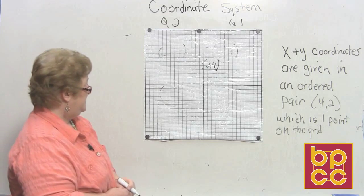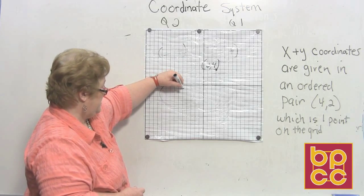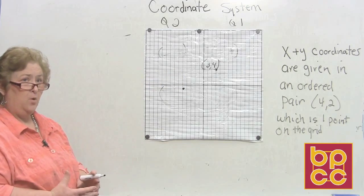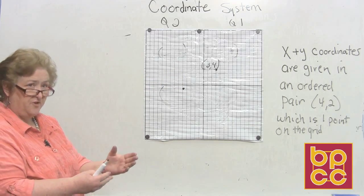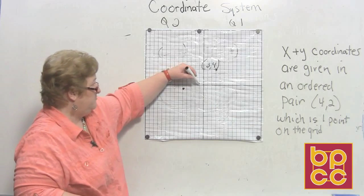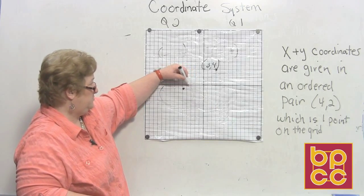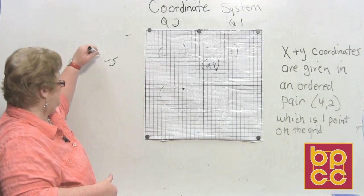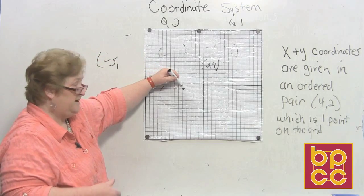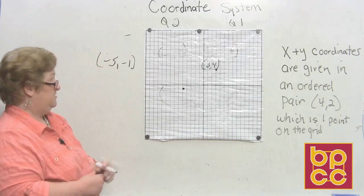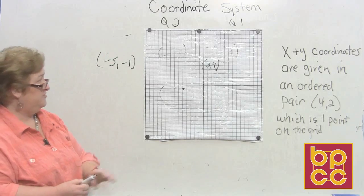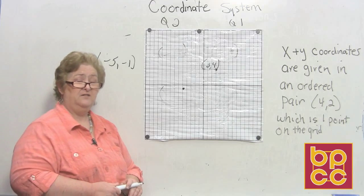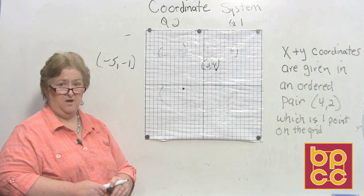For another point: move first on the x — over negative 5 — then from there down 1. So the ordered pair for that point is (-5, -1). I think you've got it and I think you'll have a good time with these lessons in this module.